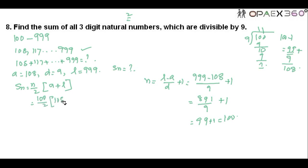So write this N here: 100 by 2 into A is 108 plus L is equal to 999. So 100 by 2 is equal to 50 into 1107. If you multiply these two, you will get the answer 55,350 which is the answer, the sum of all three-digit natural numbers which are divisible by 9.